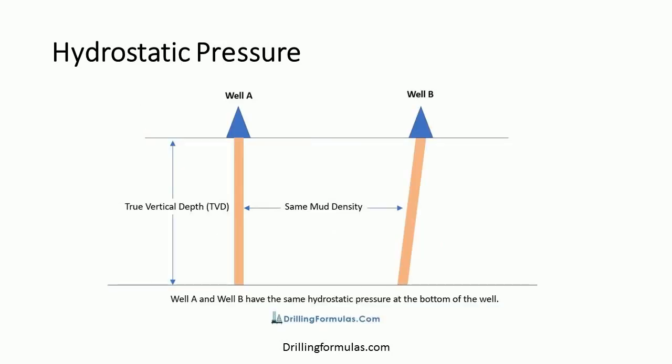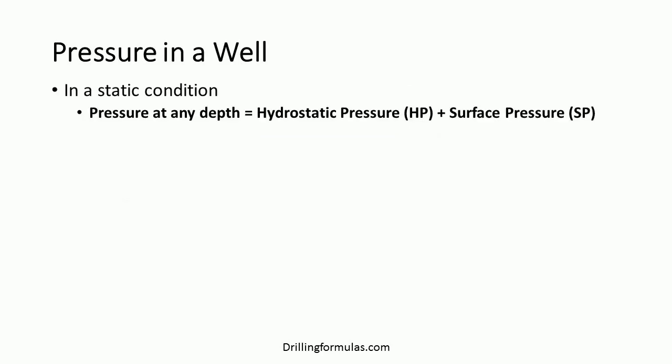For example, well A and well B have the same vertical depth. With the same mud density and hole, the bottom hole pressure due to hydrostatic pressure is the same. The only difference between well A and well B is mud volume. In a static condition, pressure at any depth is equal to hydrostatic pressure plus surface pressure.